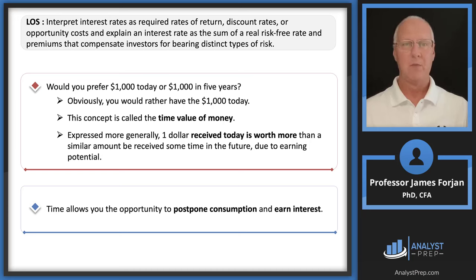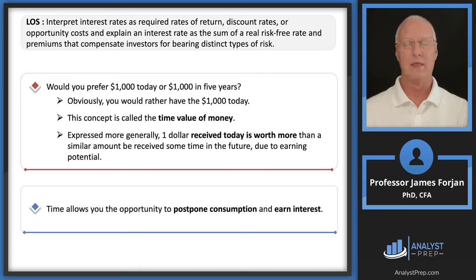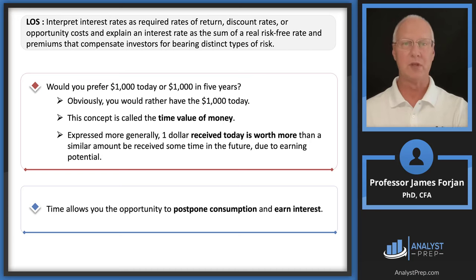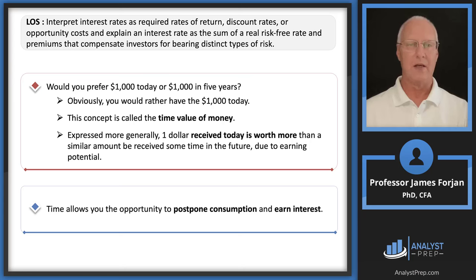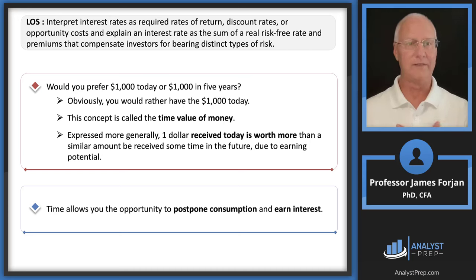If we had $1,000 today, we could go out and spend it. But we could also invest it in a bank and earn interest or invest it in some other kind of financial security. And as long as the interest rate is positive, we would have more than $1,000 tomorrow or two years or five years from today, which means we can consume more in the future. That's really an interesting trade-off — consume today or consume tomorrow? And as good financial analysts, it's our job to help our clients make that determination.